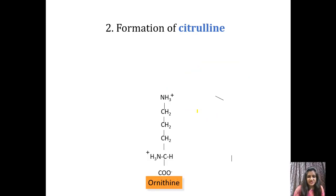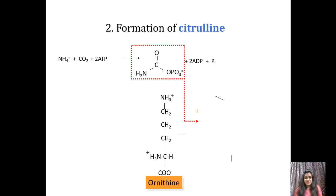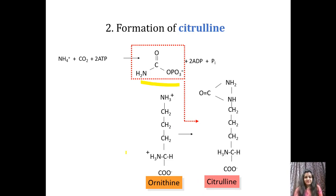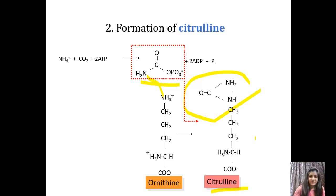The second step is formation of citrulline. The carbamoyl phosphate reacts with ornithine and forms citrulline. These two structures join together to form the structure of citrulline, and one phosphate is removed in the process.